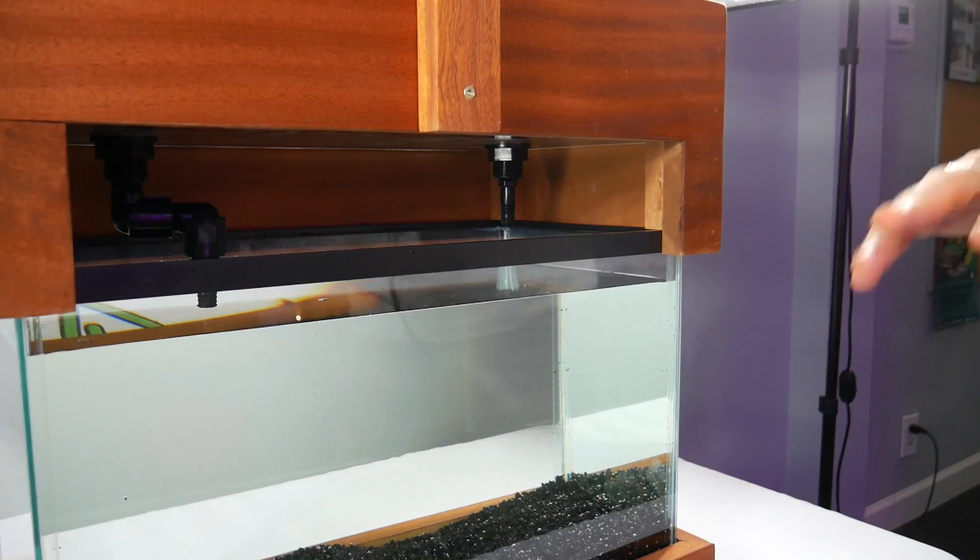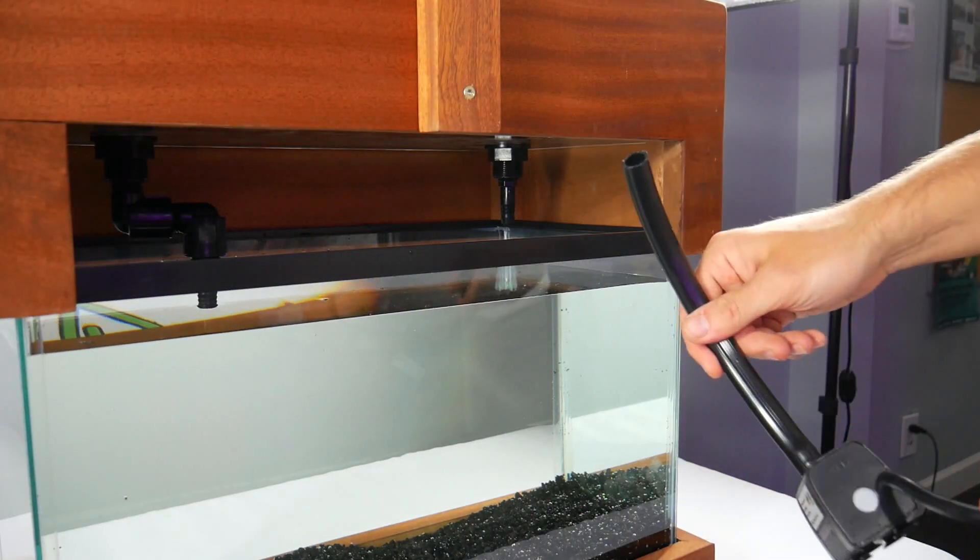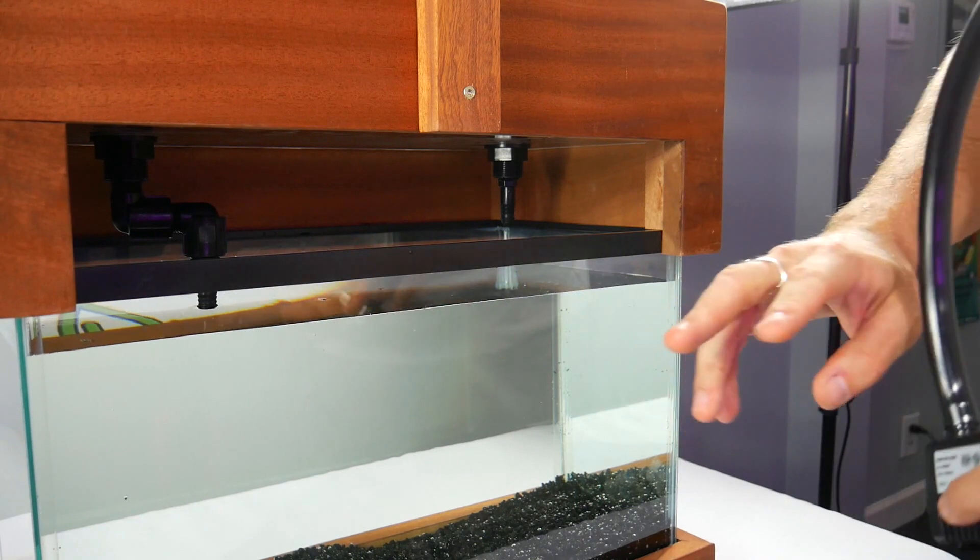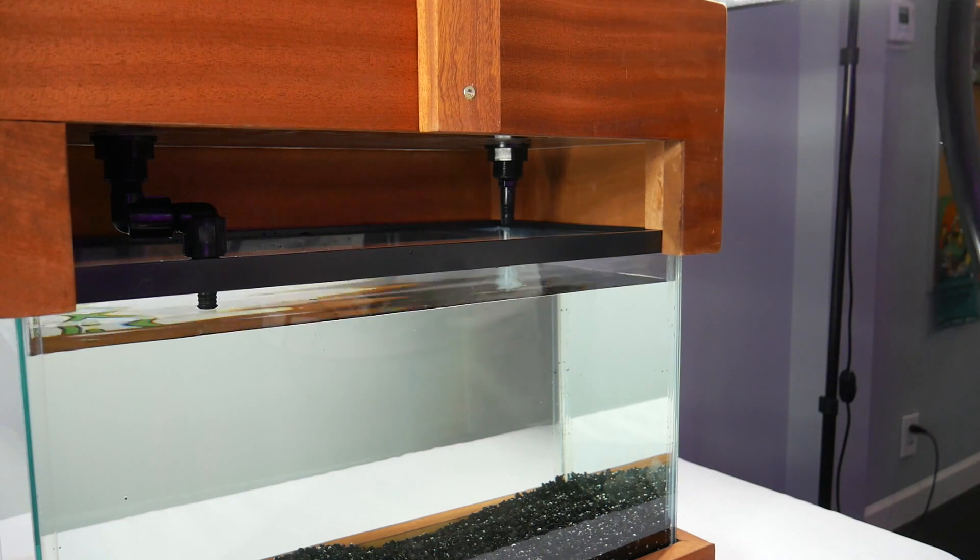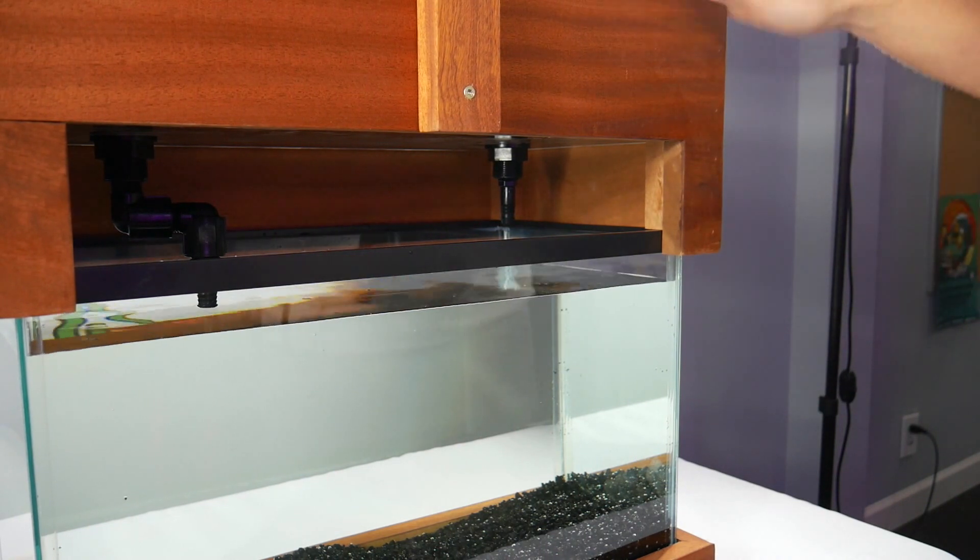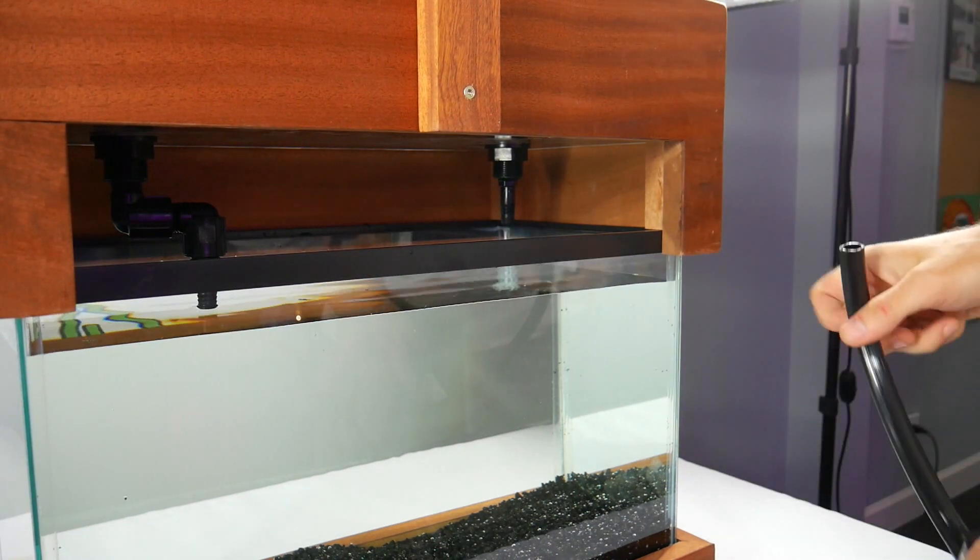So once you have the bell siphon all figured out, you add your pump. And your pump will put water from here into here and this is what's going to make your bell siphon work and this is how your plants are going to get their nutrients and their water. Let me show you how to install it.